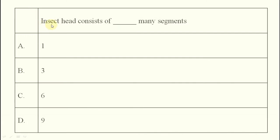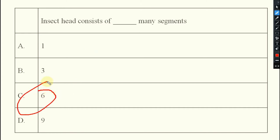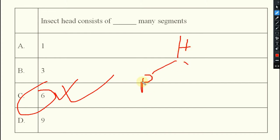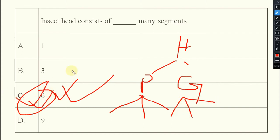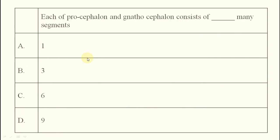First question: insect head consists of how many segments? The answer will be six. One confusion may be there — insect head is broadly divided into two segments: procephalon and gnathocephalon, and each is divided into three segments. So the answer is six — broadly two regions, each subdivided into three, giving six segments total.